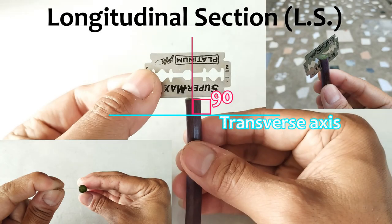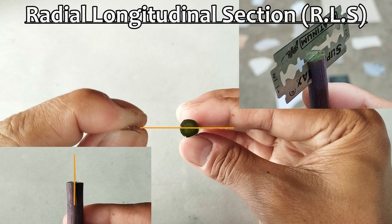Longitudinal section or LS of a plant material is that section obtained by cutting through the material vertically or at right angles to the transverse axis of the material. In the case of materials with cylindrical or similar such forms, such as a plant stem, a cut made longitudinally right through the center of the material produces what is known as a radial longitudinal section or RLS.